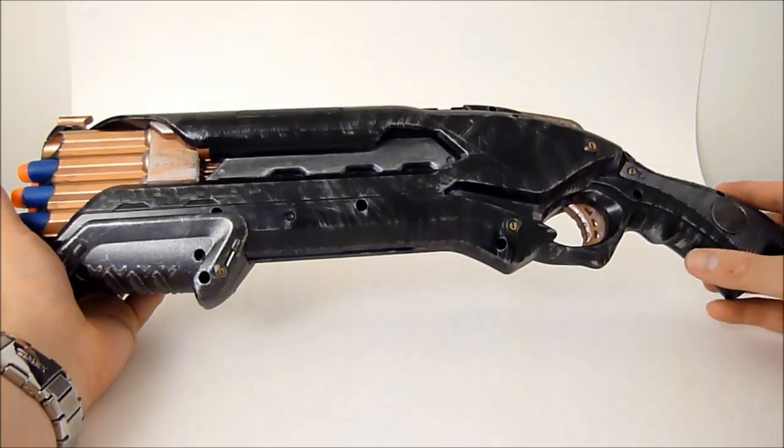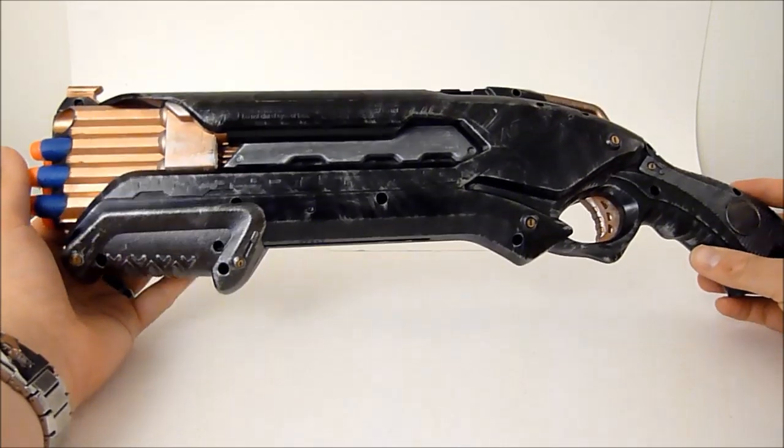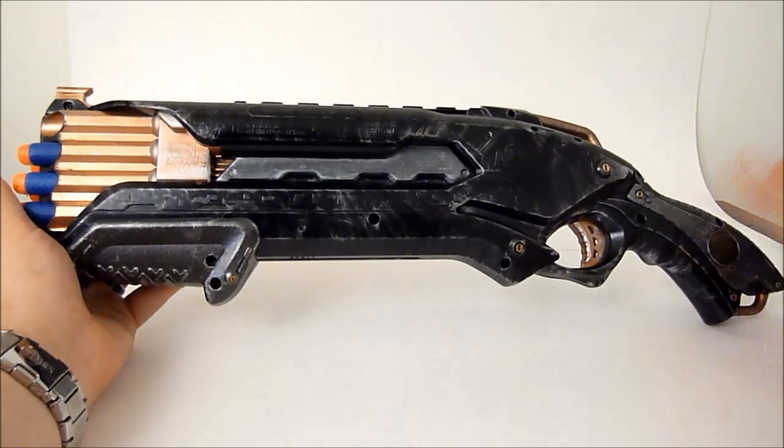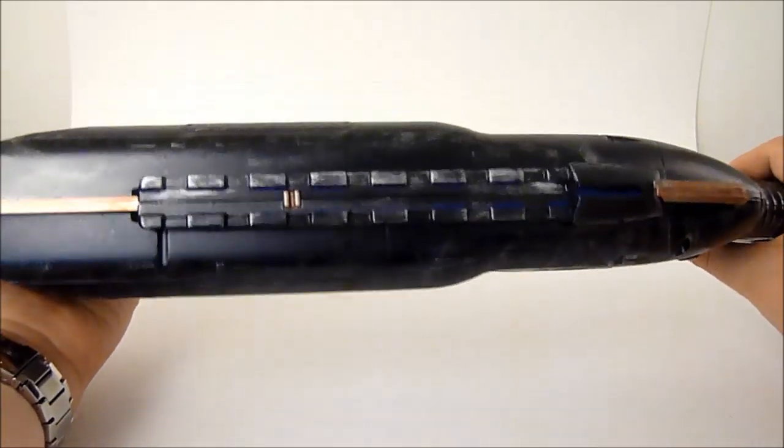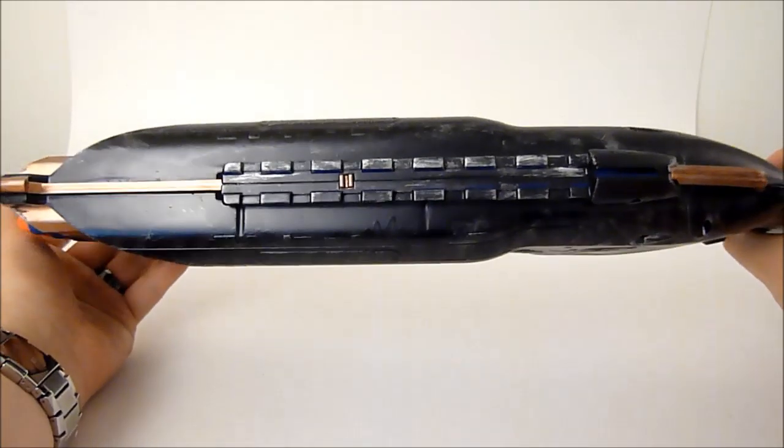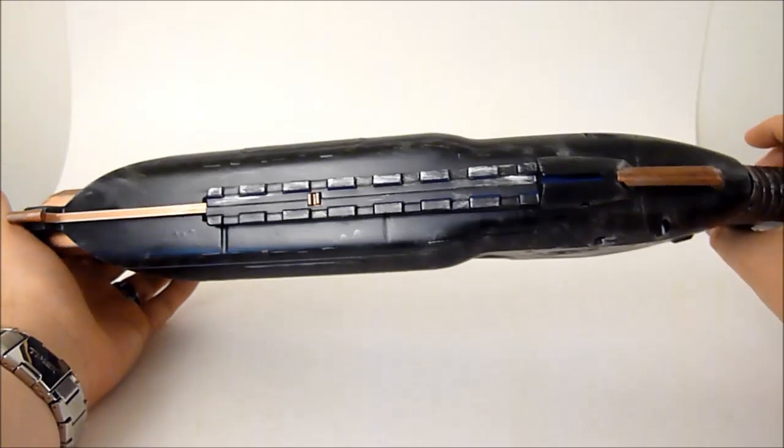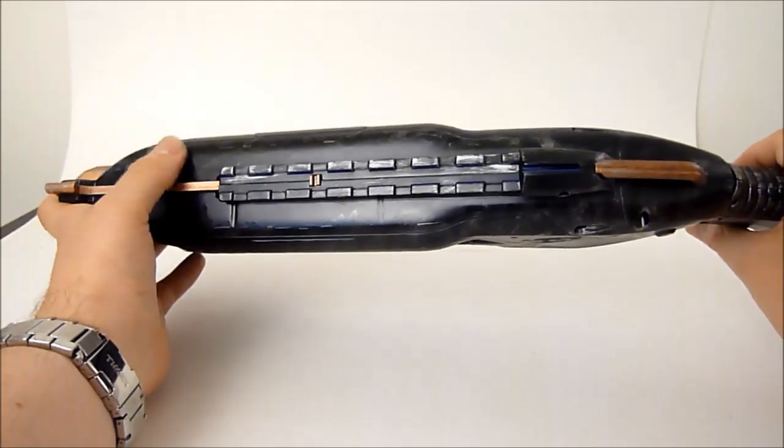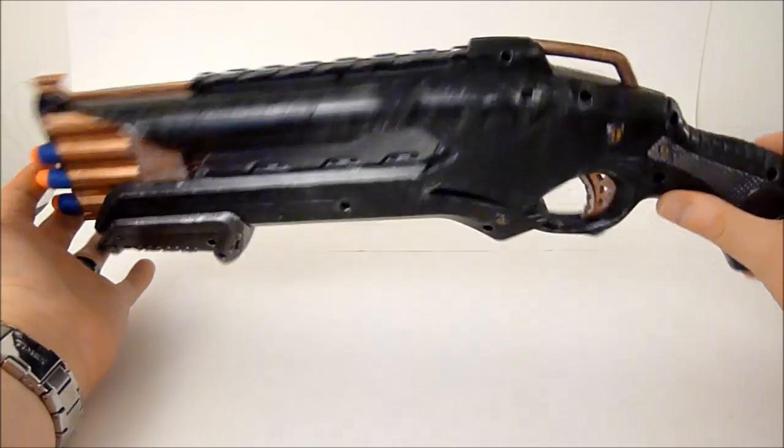I ended up running out of that and using like Rust-Oleum or something like that. And it said flat black, but it is obviously, you can see right here, it is like semi-gloss. And it got runny and all kinds of stuff. I had so many problems with it.